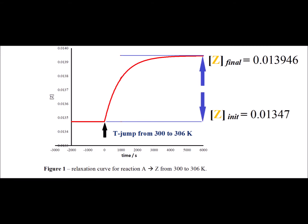The solid blue arrows denote the difference in the equilibrium concentrations of Z from 300 degree Kelvin to 306 degrees Kelvin. This will be denoted by the letter D sub zero. That is the initial difference between the equilibrium concentrations at 300 Kelvin and 306 Kelvin.